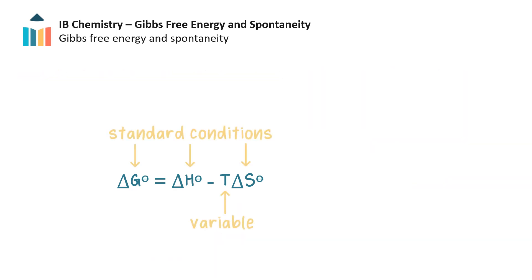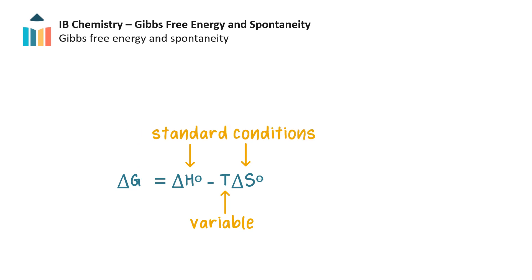Since delta G is positive, this indicates a non-spontaneous reaction under these conditions. You may be wondering why we use standard values here but can potentially substitute any value for temperature, since it is a variable in this equation. The Gibbs equation assumes that delta H and delta S are relatively constant over a range of temperatures, and so we can use temperature values other than standard temperature. In which case we would write delta G instead of delta G standard.